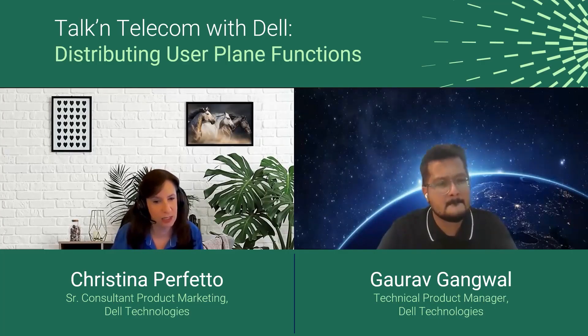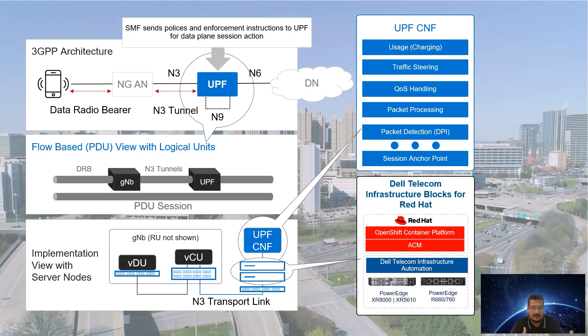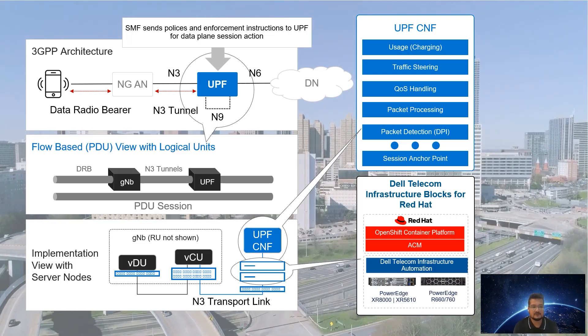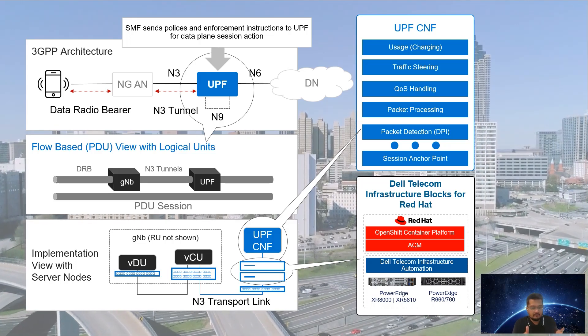How can Dell help operators address these challenges? Dell offers Dell Telecom Infrastructure Blocks — engineered solutions designed to streamline the design, configuration, and management of telco cloud infrastructure, from day zero deployment through day two lifecycle management, providing a cloud-native solution with automated deployment and lifecycle management at its core. For distributing UPFs, Infrastructure Blocks for Red Hat provide an engineered horizontal cloud stack platform, helping operators break down technology silos and deploy a common cloud platform from core functions to edge to RAN, allowing operators to pool resources to meet changing workload requirements.